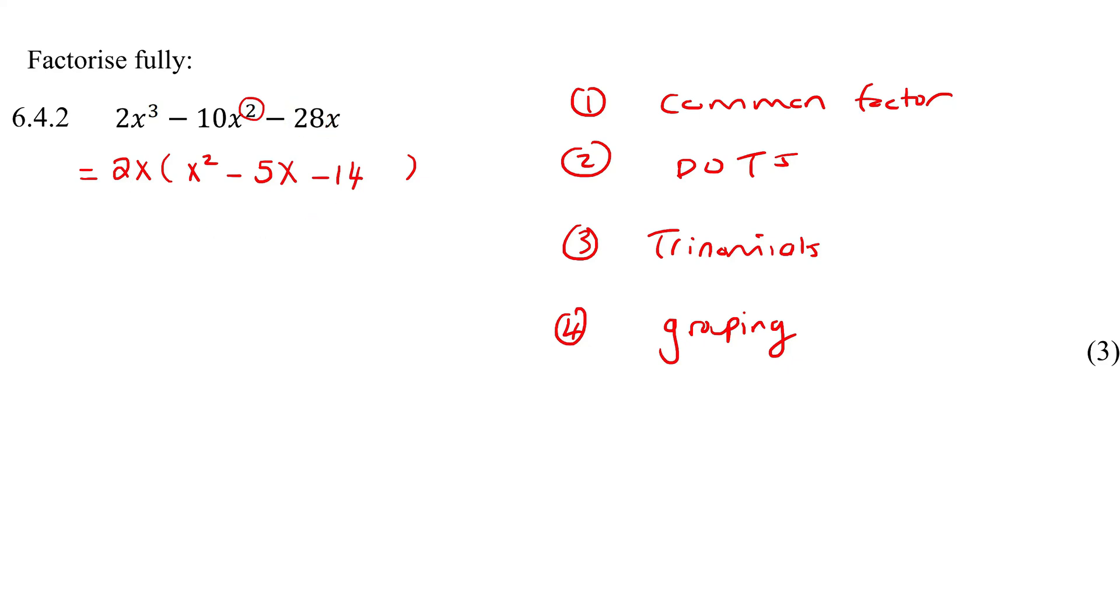Here I will still have a 14, because two times 14 is 28. I don't have any x's left over, because I only had one here and I took it away. There we have that. That'll get you one mark. We've done the common factor.